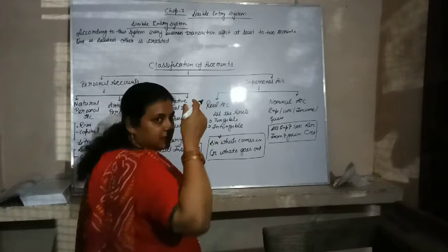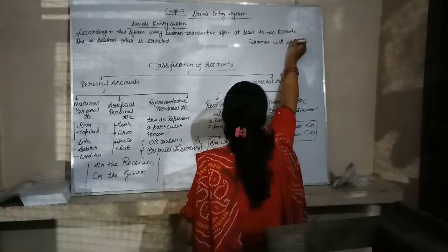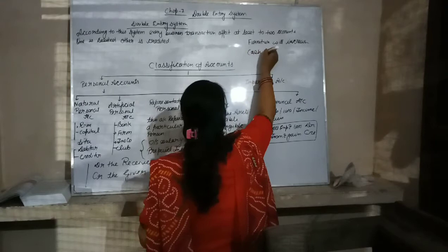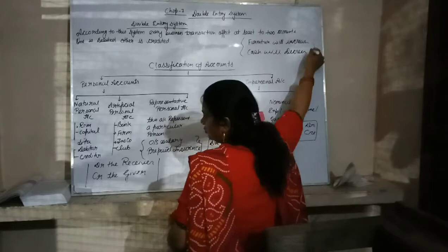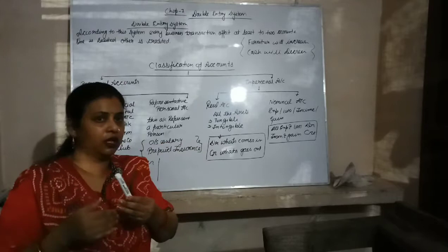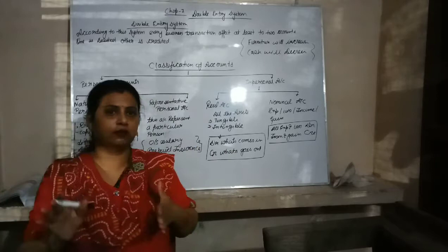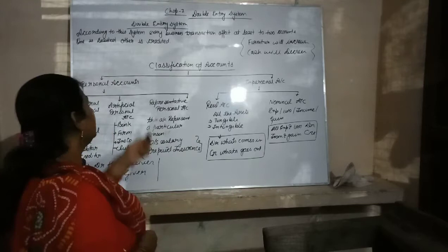For example, if we purchase furniture for the business, then furniture will increase and cash will decrease. One account has been increased and the other account has been decreased. In the double entry system, it is compulsory that the debit side of the account should be equal to the credit side of the account, because it affects two sides of the transaction.